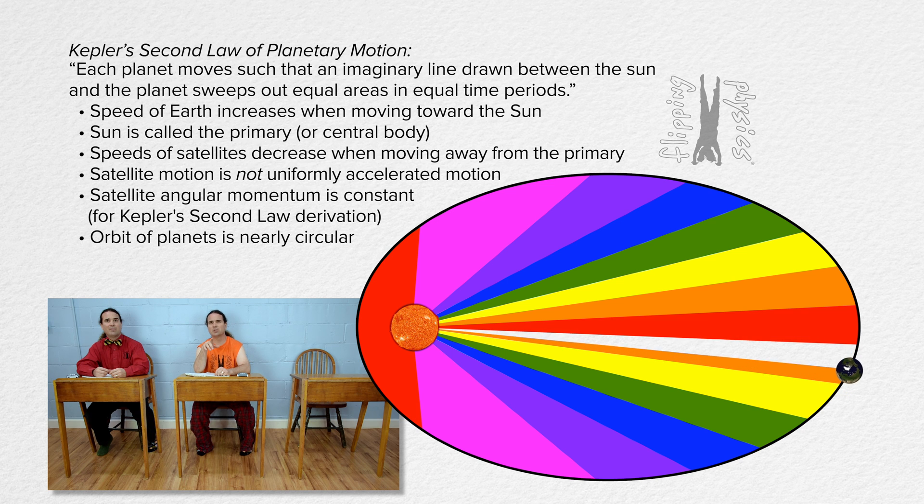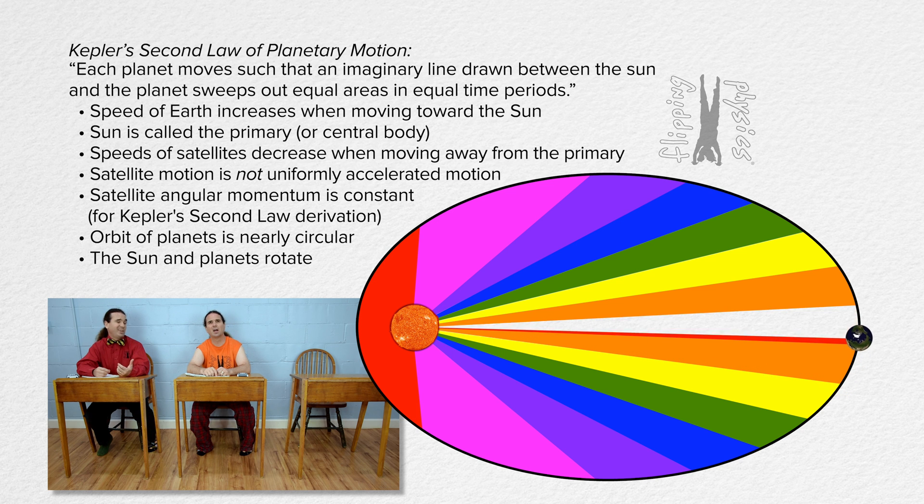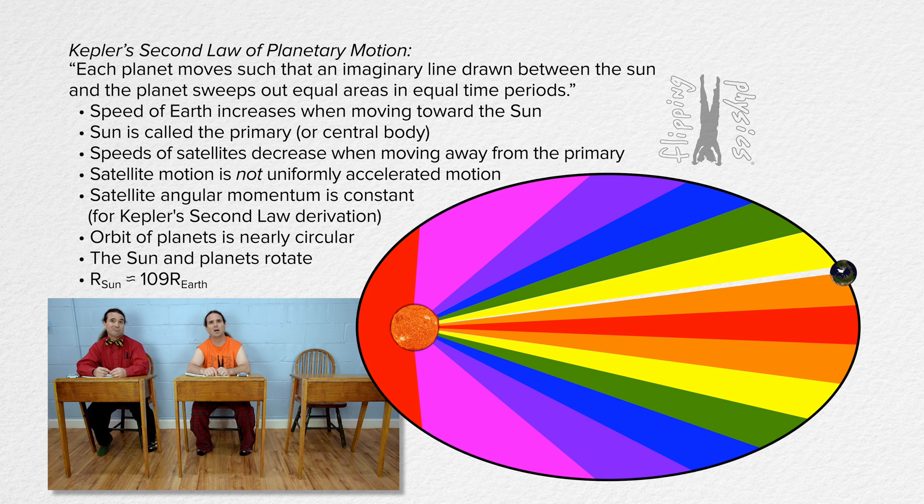The Earth and sun should be spinning, right? Yeah, and the Earth is actually way smaller than the sun. Huh.